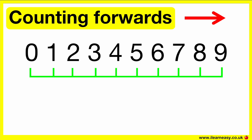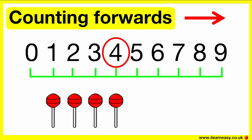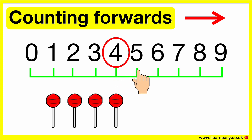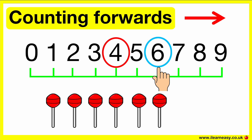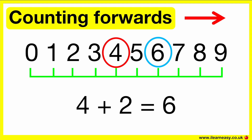Now, let's work through some examples. First, you need to start at four because there are four lollipops. Then, we need to add on two more. One, two, three, four, five, six. Four plus two equals six.